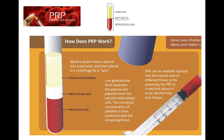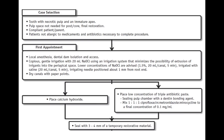PRP collection is simple: you collect blood from the patient and place it in a tube. Due to the difference in specific gravity or density, there will be differentiation of RBC, WBC, plasma, and platelet cells. Now the case selection — this is a very important flowchart that examiners frequently ask about. The first criterion is a tooth with necrotic pulp and an immature apex, which is the best indication.